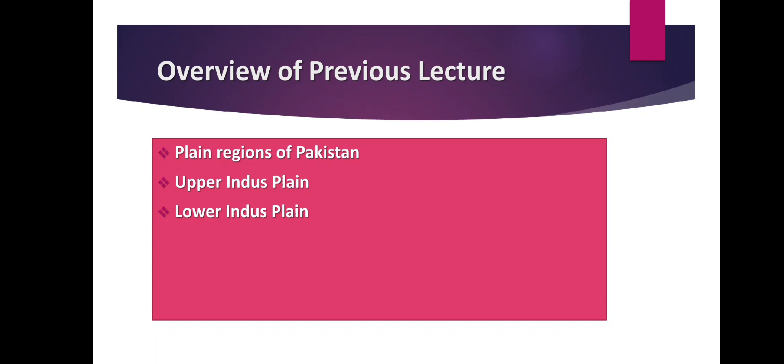In the Upper Indus Plain, we discussed that it is a very fertile and important plain from an agricultural point of view. River Indus is the most important and longest river of Pakistan. The Upper Indus Plain is almost level and made of soil deposited by rivers — the Indus, Jhelum, Chenab, Ravi, and Sutlej — which is why the soil is very fertile. Most irrigation is done by canals, and the shortage of rainfall is met with artificial sources of irrigation like tube wells and canal water.